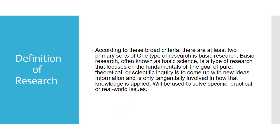Definition of Research: According to this broad criteria, there are at least two primary types of research. One type is basic research, also known as basic science, which is a type of research that focuses on the fundamentals. The goal of pure theoretical or scientific inquiry is to come up with new ideas and information, and is only tangentially involved in how that knowledge is applied.